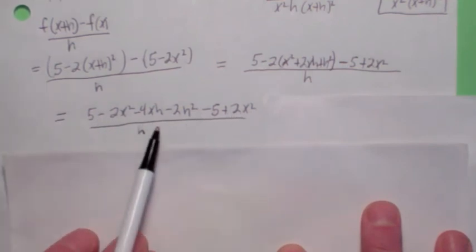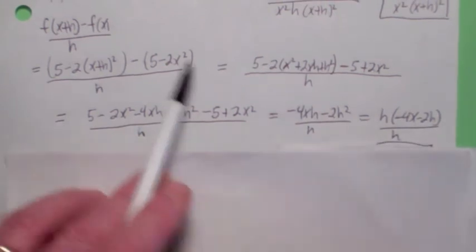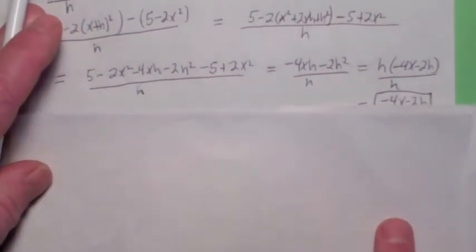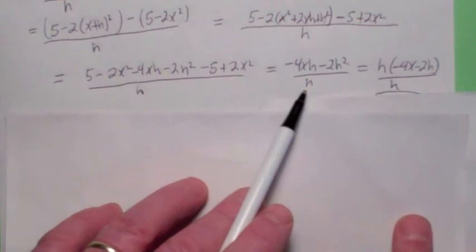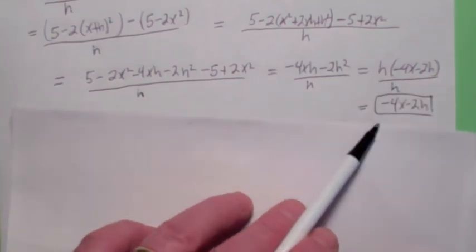And what you're left with is negative 4xh minus 2h squared over h on the top, which then you can factor the h out of the top, cancel at the bottom, and you're left with negative 4x minus 2h. Did you get that?